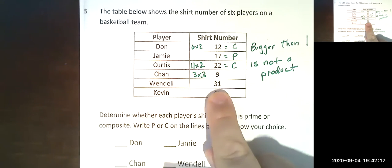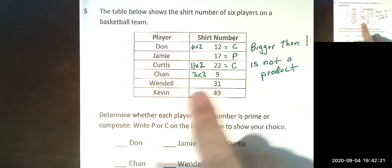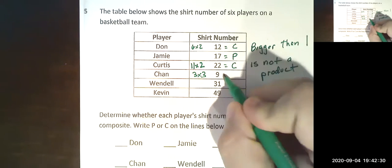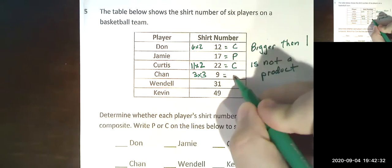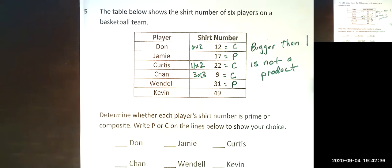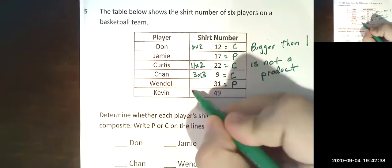4 doesn't go in, we'll never get into that 1. 5 will never get into that 1 because once you go into the 3, 6, 7, 8 never goes into it, 9 never goes into it. So 31 has got to be prime. 49, I know you guys have to take some time to figure this out. 7 times 7 is 49, so that's got to be composite.